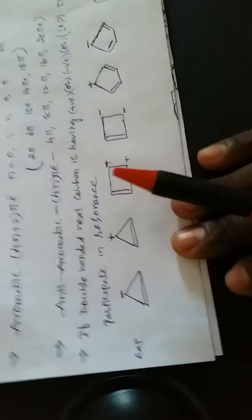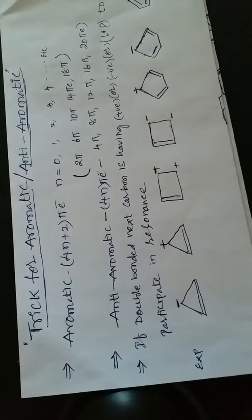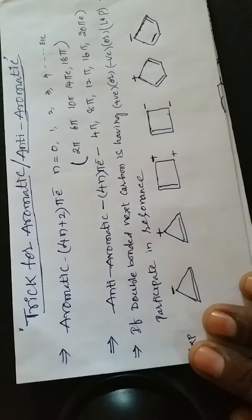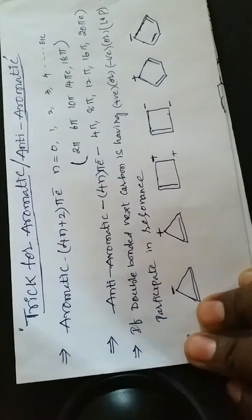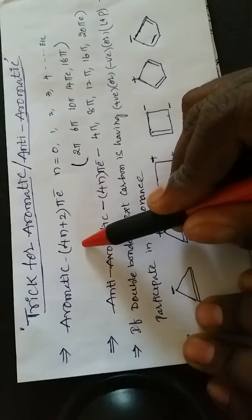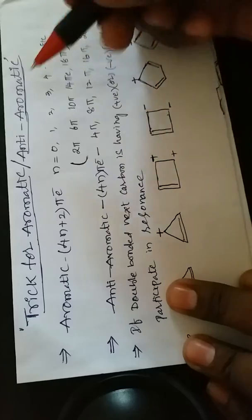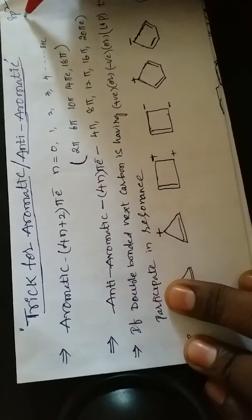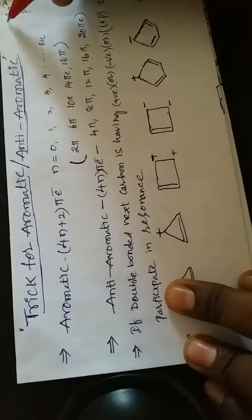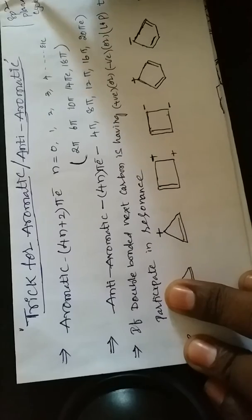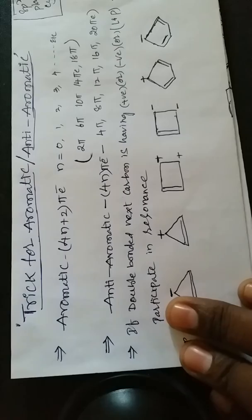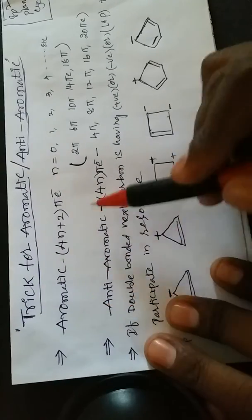Our next topic is a trick for identifying aromatic and anti-aromatic compounds. Aromatic means 4n+2 pi electrons. In aromatic compounds, carbon should contain sp2 hybridization with a planar, cyclic structure. These are the main important criteria for identification of an aromatic compound.